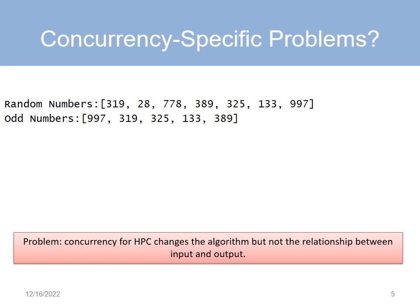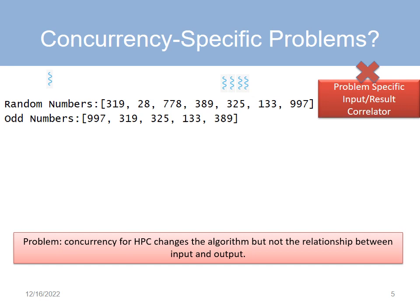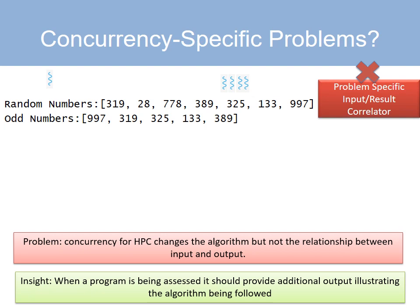However, this approach doesn't work if your goal is to parallelize a program to improve its performance. The reason is that whether the result is computed by one thread or multiple threads, it doesn't change. So we can't quite use a problem-specific input-result-correlator.